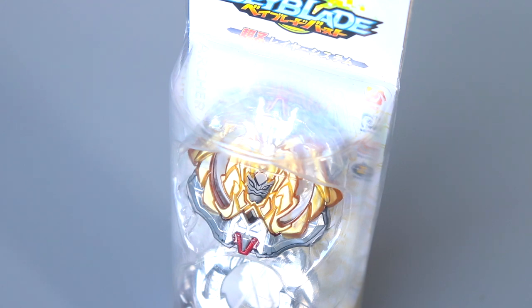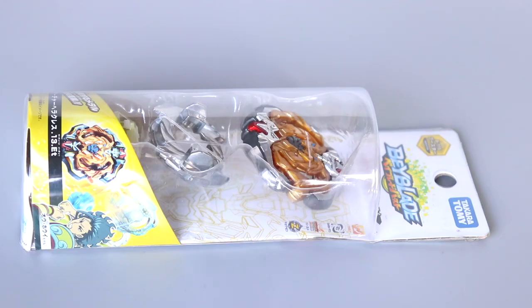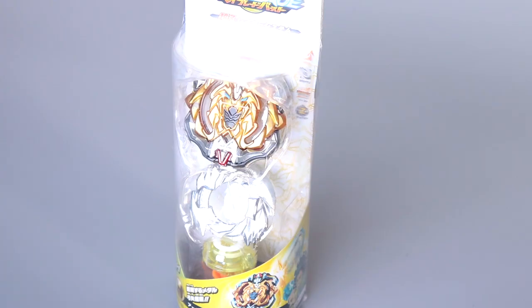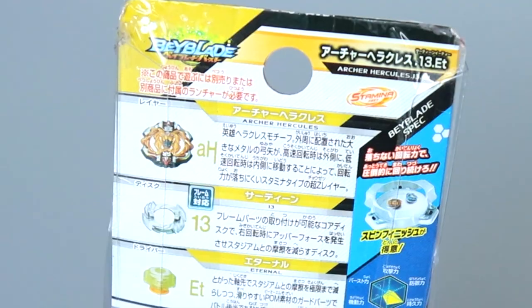The front of the box just displays the Beyblade like any other booster. On the bottom of the front of the box you can see the character that uses this Beyblade. Then we got the back which shows Archer Hercules 13 Eternal.